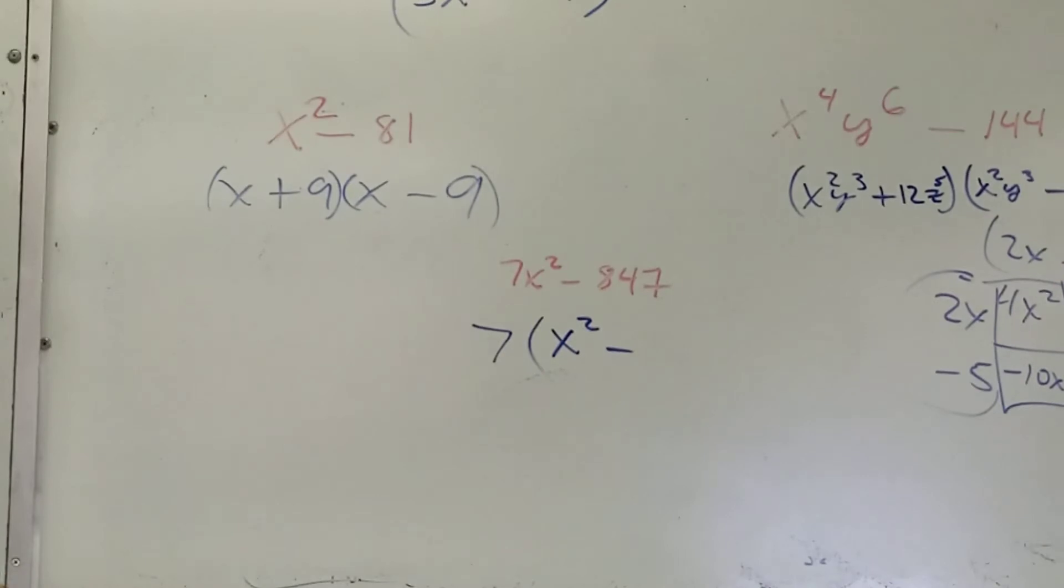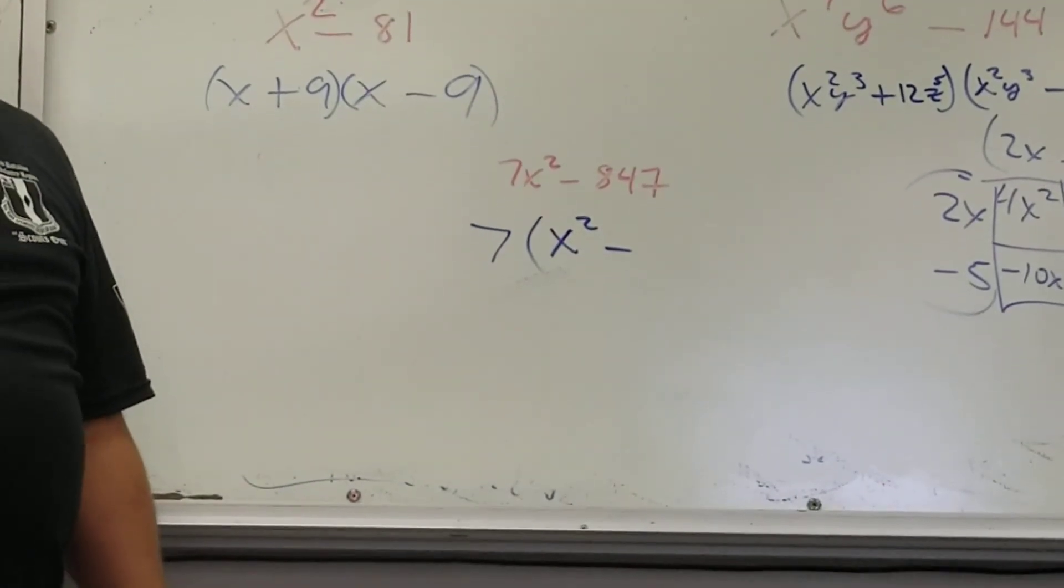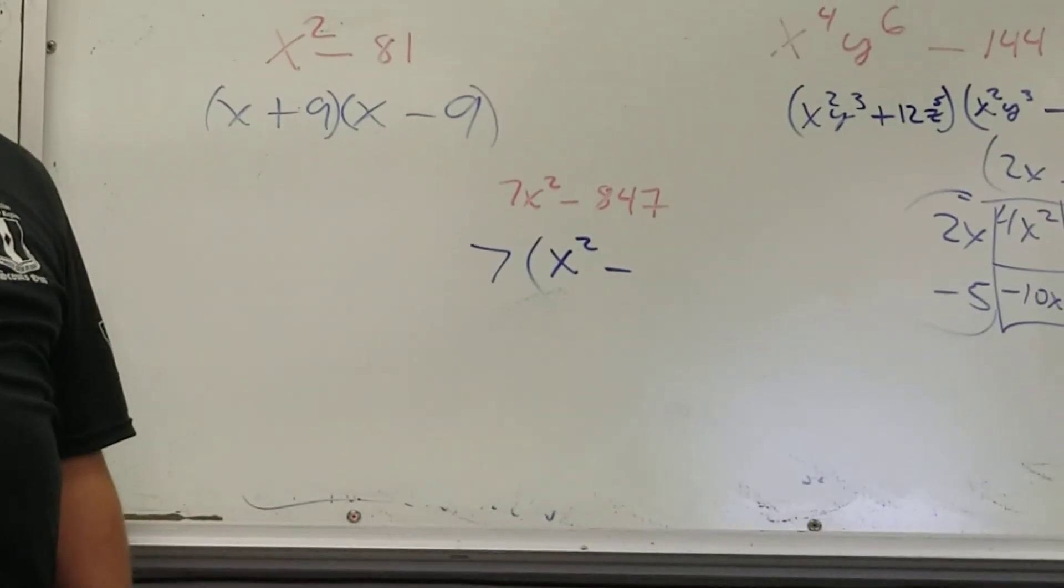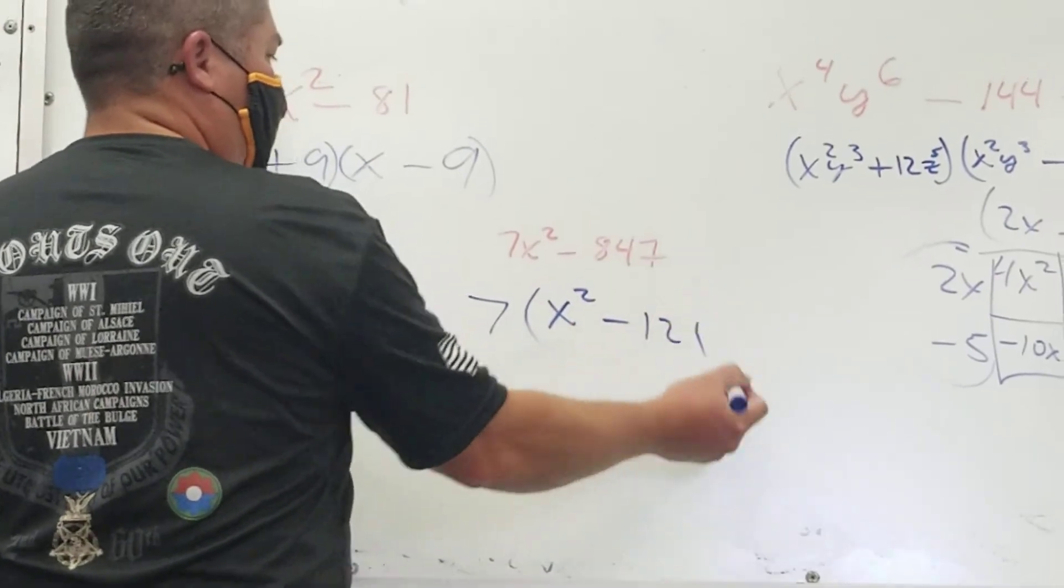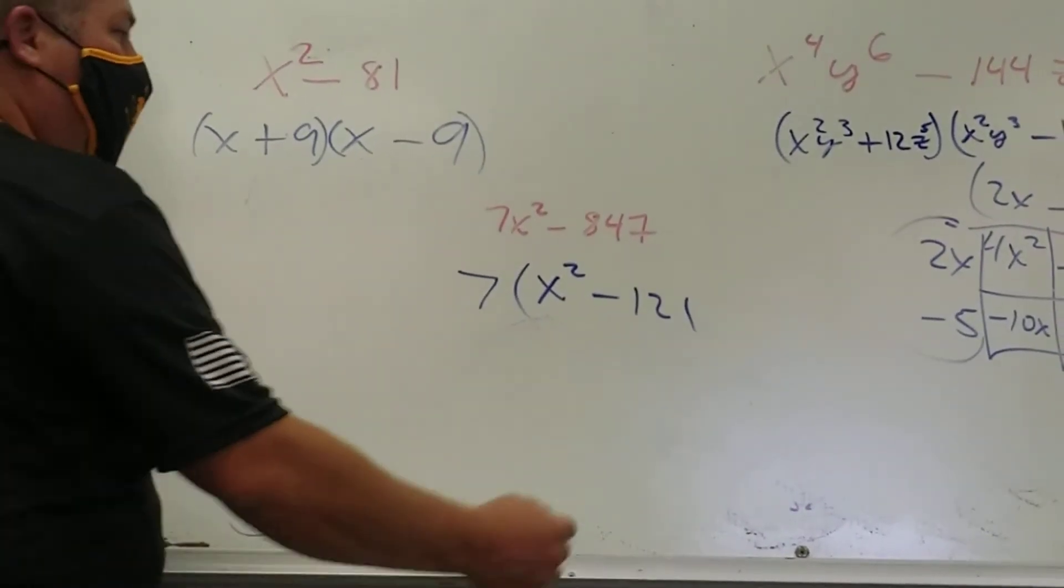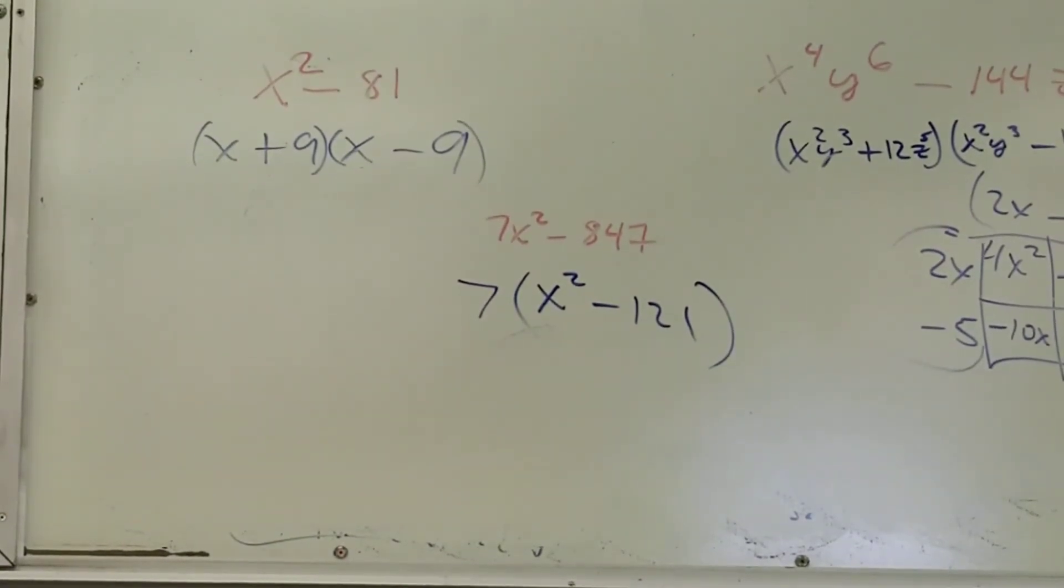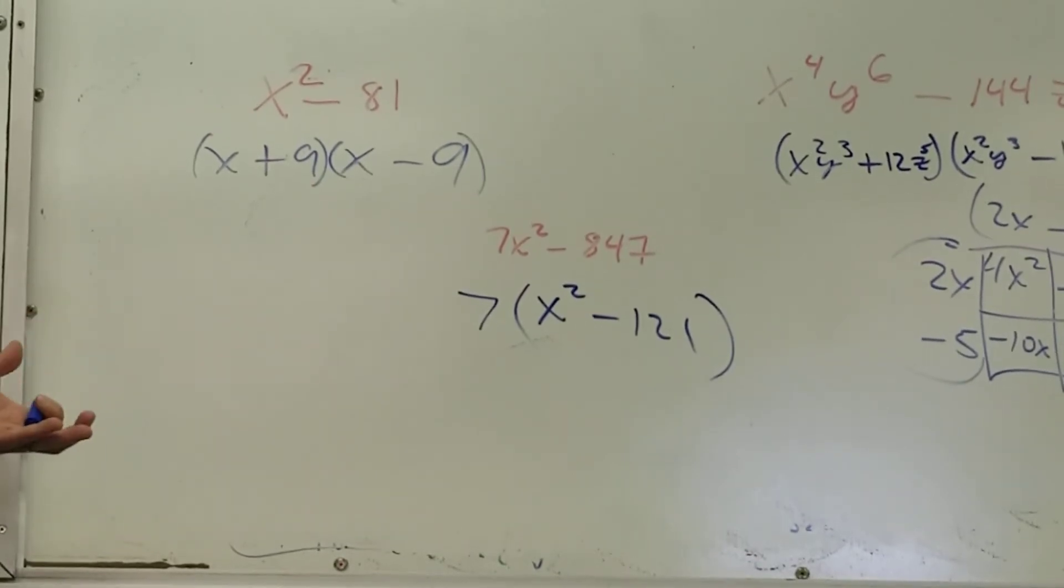X squared minus, what's 7 into 84? Anybody know? 7 into 84? 12. What's 7 into 7? 1. I mean, I obviously didn't know that 7 times 121 equals 847, but it's not that hard to figure out.